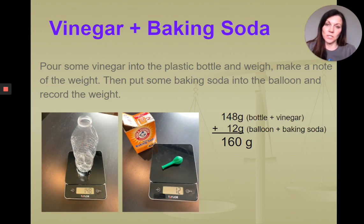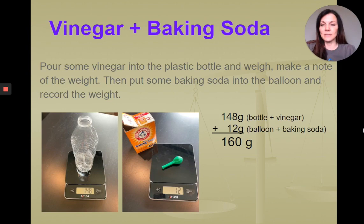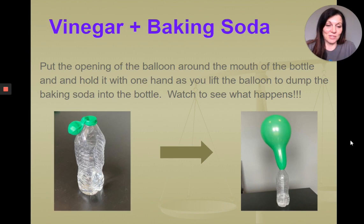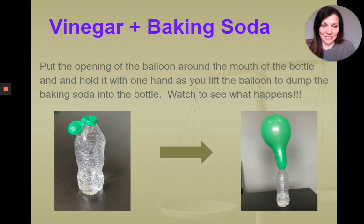One thing to keep in mind: when we're using a kitchen scale, it's going to round to the nearest whole gram, and so that sometimes affects our measurements when talking about the law of conservation of mass. The next thing we did was put the opening of our balloon over the mouth of our bottle. When I lifted it up, a reaction took place — a gas was released and it inflated our balloon. That was a lot of fun to be able to see that reaction take place.